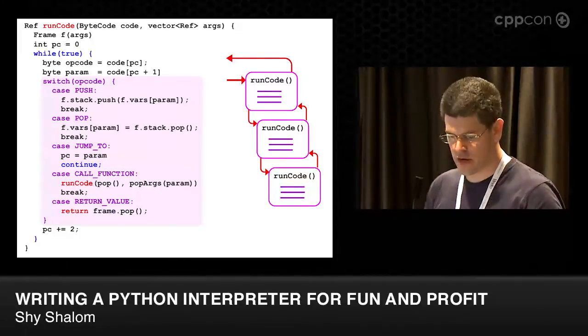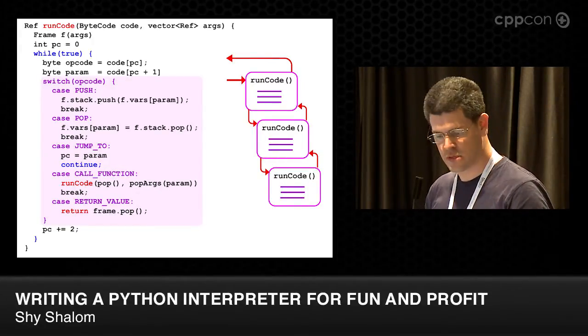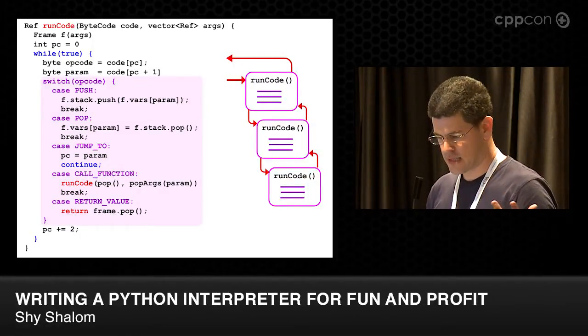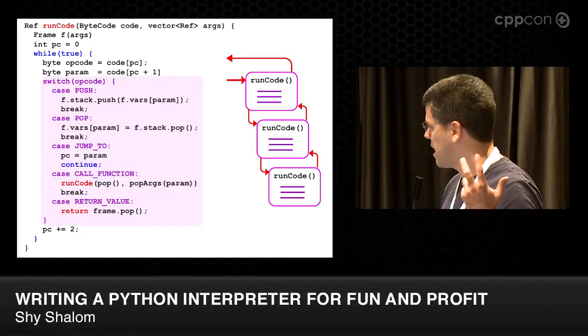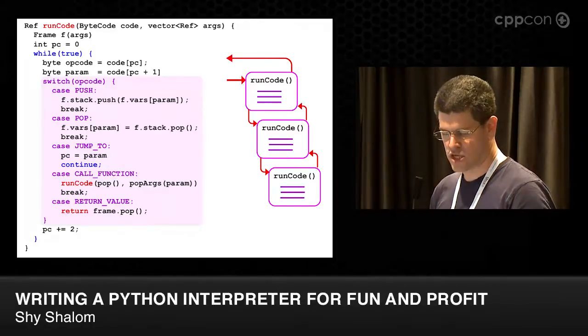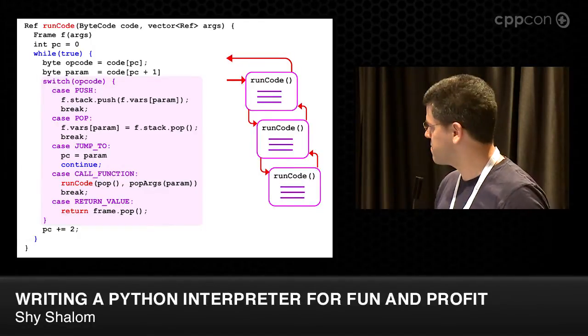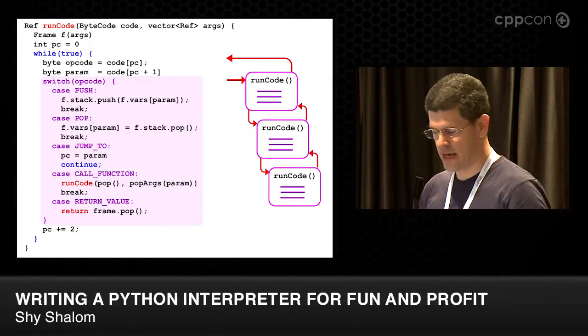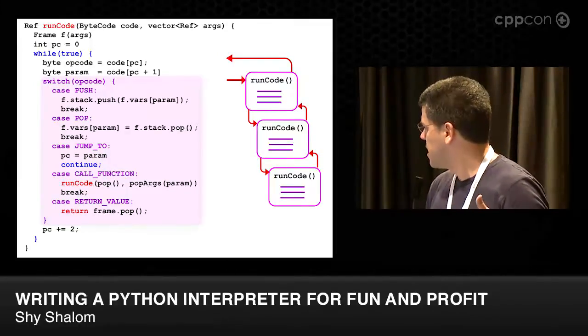and for every opcode it executes it with a big switch statement. We have here a few of the opcodes, you can see pop and push which manage the stack machine I mentioned. And when Python calls a function, it actually calls this runCode recursively. It uses the C++ call stack as the Python call stack. This is as opposed to a stackless Python implementation which doesn't do that.